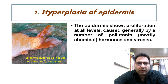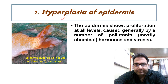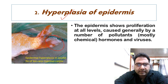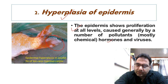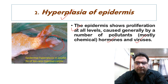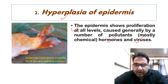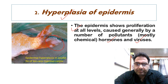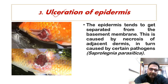The second condition is hyperplasia of epidermis. Here we see epidermal hyperplasia in the caudal fin of the koi carp, Cyprinus carpio. The epidermis shows proliferation at all levels. It is caused generally by a number of pollutants, hormones, and viruses. We shall be dealing with viral diseases, bacterial diseases, fungal diseases, and protozoan diseases one by one later on. Hyperplasia of the epidermis may be due to hormones and viruses.